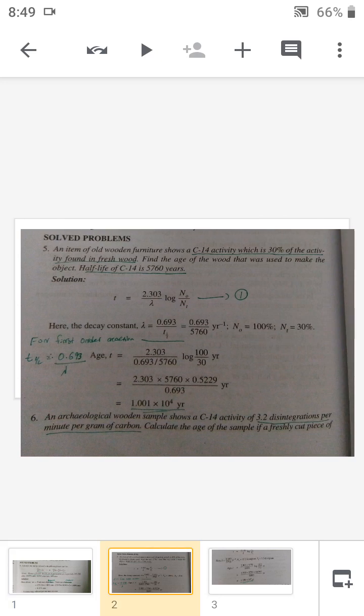The next question: an item of old wooden furniture shows a C-14 activity which is 30% of the activity found in fresh wood. Find the age of the wood that was used to make the object. The half-life of C-14 is 5760 years.